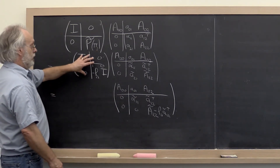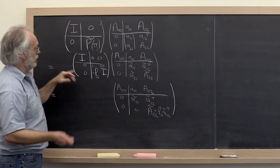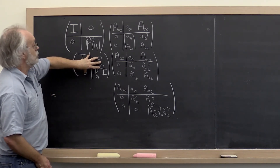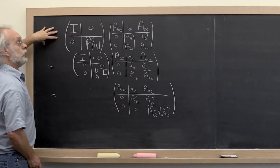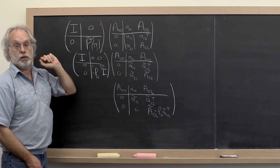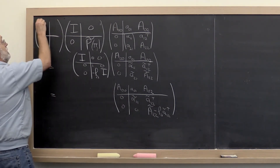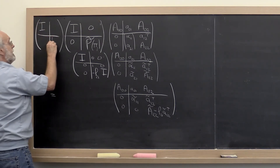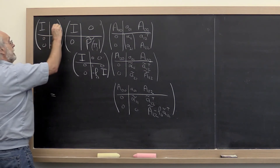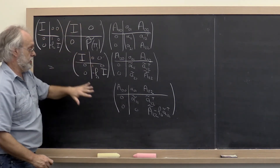Now if we say this is equal to this, we're a little bit off because you really want to see that this Gauss transform in effect also has to be applied to whatever we started with. So here we need to say the identity, 1 minus L_21, identity. And now we indeed have that this is equal to this.